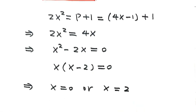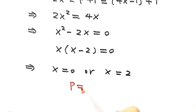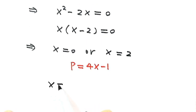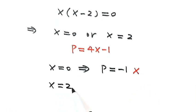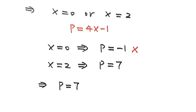Using p equals 4x minus 1 to solve for p: when x equals 0, p equals negative 1, which is not a prime number. When x equals 2, p equals 7, which is a prime number. So p equals 7 is the only prime number for which the system of equations has integer solutions.